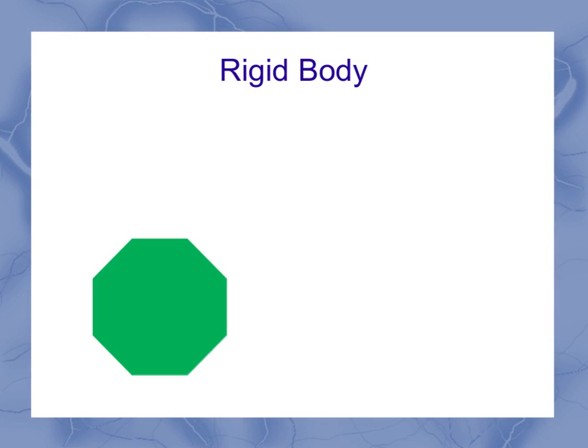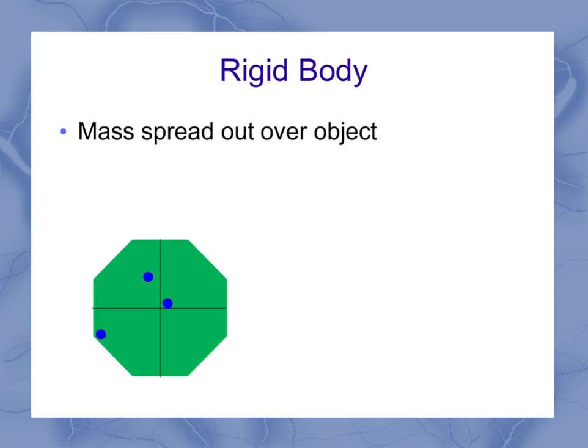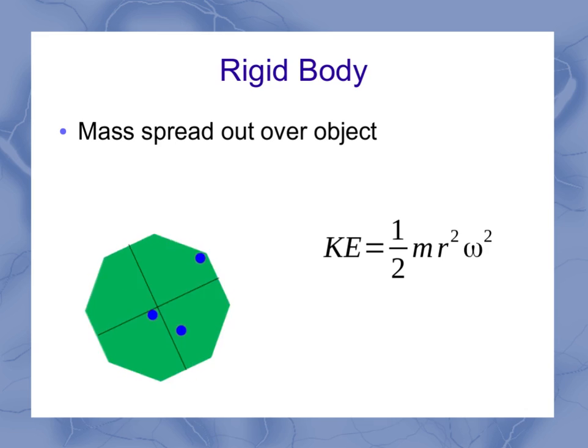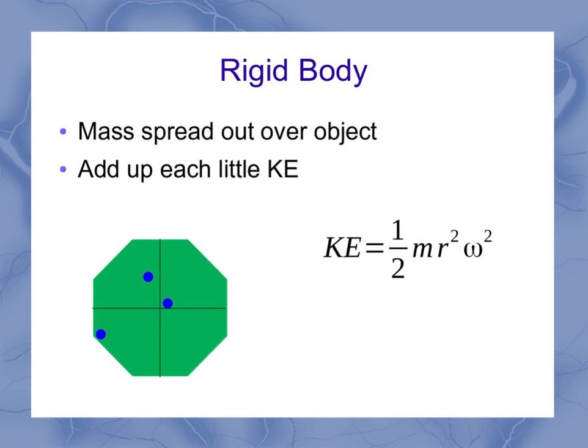Now for a rigid body, in this case my mass is spread out over the whole object. So here I've just marked a couple of specific little points. Of course, the entire thing is full of different masses. But what I want to note is that as I'm going through here, each of these little masses is at a different radius out from the center. They are rotating with the same angular speed, however. So as it starts to rotate, what I see is some of them have kinetic energy that's smaller and some is larger.